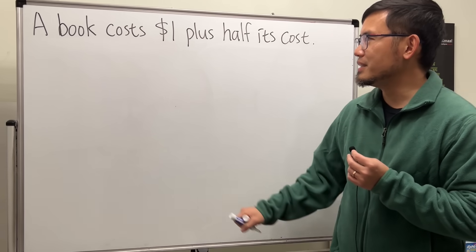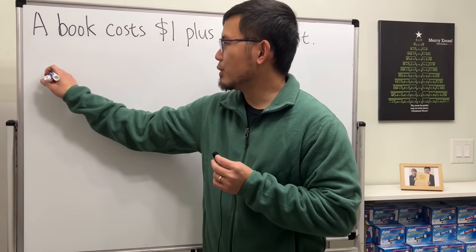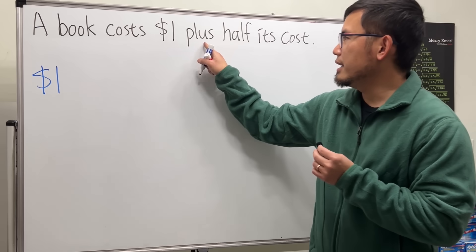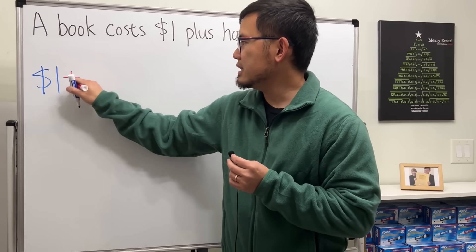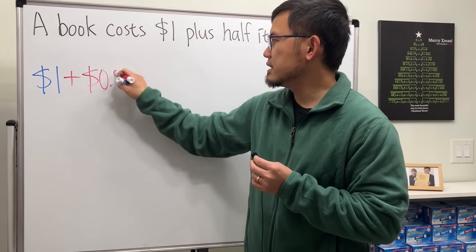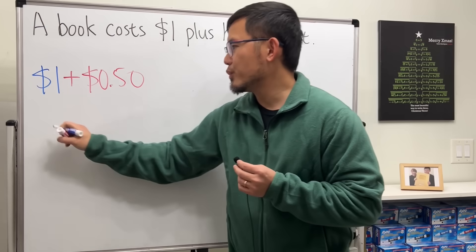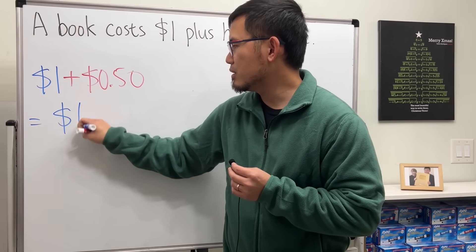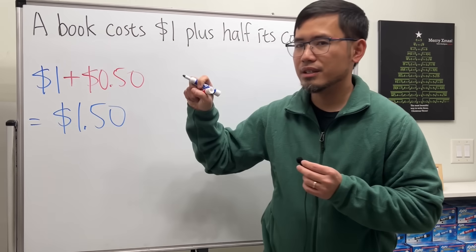I think this is what most people did to get $1.50. We see the $1 right here, and then plus, so we add half its price. Half of a dollar is 50 cents. Add them up, we get $1.50, right?